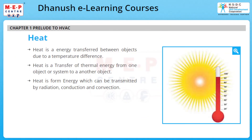Heat is the energy transferred between objects due to a temperature difference. Heat is the transfer of thermal energy from one object or system to another object. Heat is a form of energy which can be transmitted by radiation, conduction, and convection.